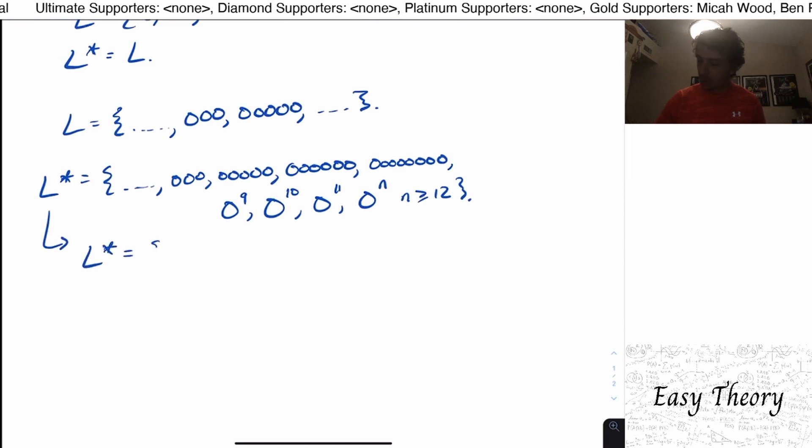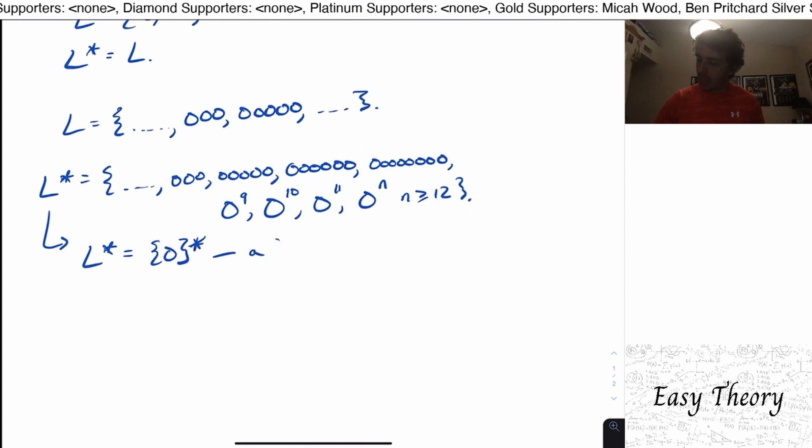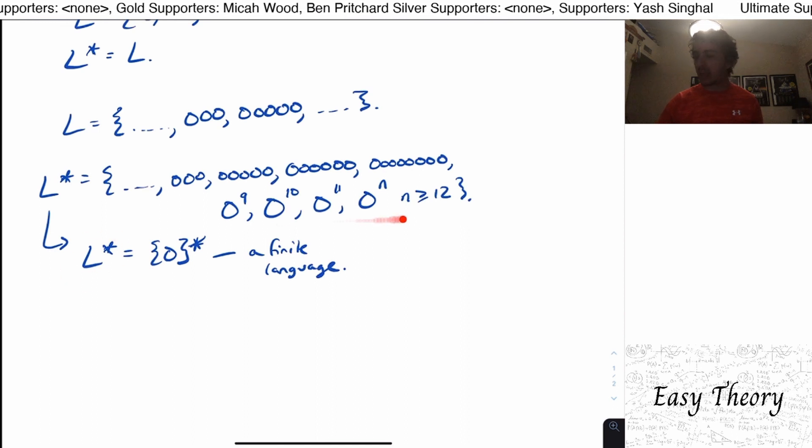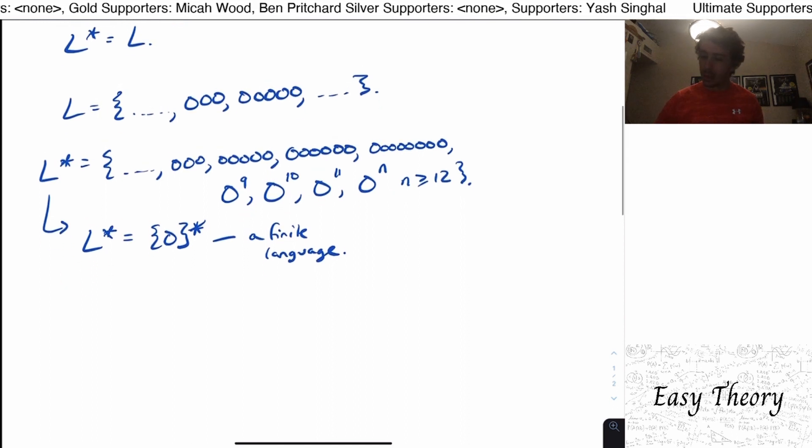So in this particular case, L star is equal to zero star minus a finite language. And since finite languages are regular, and zero star is regular, set minus is closed for regular languages. So then L star is regular. And we can see that here.